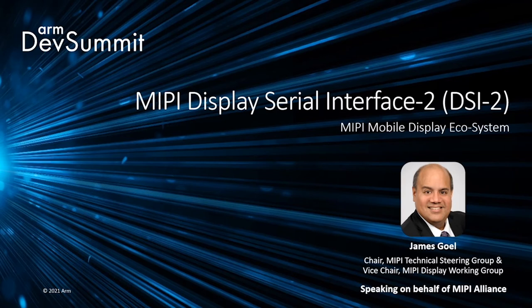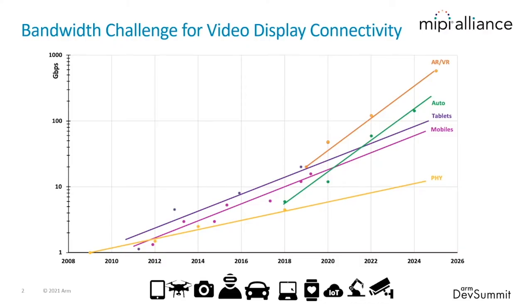This presentation provides a high-level overview of the DSI-2 interface. Display bandwidth has grown at various exponential rates depending on the type of application. This graph illustrates historic display bandwidth growth for mobile, tablet, automotive, and AR/VR applications, extrapolating trends with predicted future growth. On the Y-axis, display bandwidth in gigabits per second is plotted exponentially, and on the X-axis, the year. Application bandwidths are accelerating, while the physical interface — the PHY — has a fixed growth rate. This increasing bandwidth requirement is one of the key challenges for embedded mobile displays.